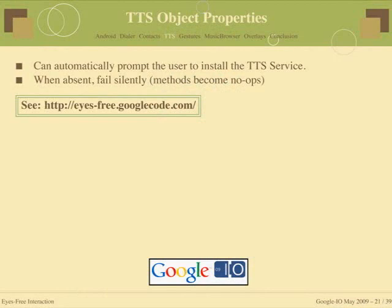The current behavior of the text-to-speech engine is that it will automatically prompt users to install the TTS service if it's absent. You can set it to fail silently, or automatically redirect the user to the market where they can download the TTS service. For more information and to check out our source code — this is all open source and free — please take it. We look forward to seeing what you can build with this. The URL is eyesfree.googlecode.com — that's where you can get all the source, all the JARs, everything.